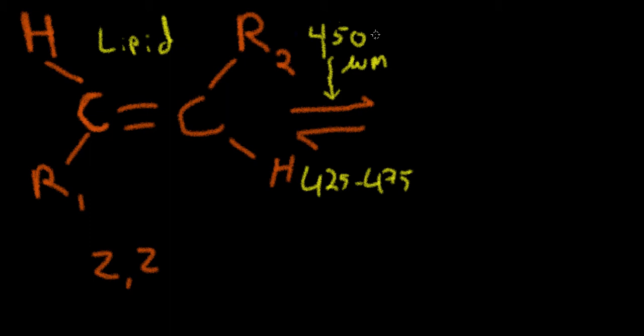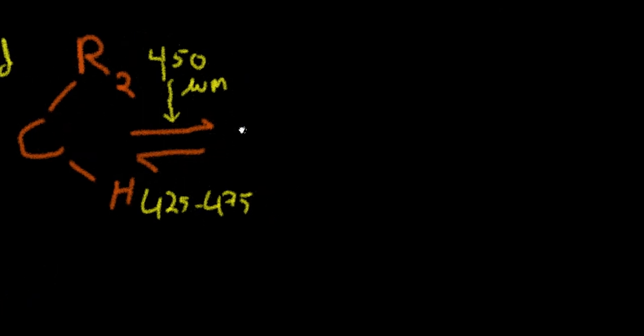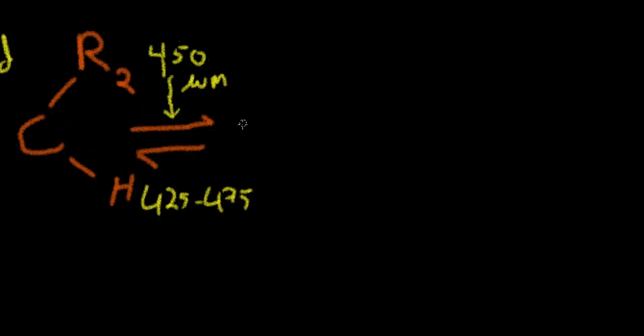And what that does is it will transiently weaken this double bond here. It does not snap the double bond. This is not ionizing radiation. We're not going to completely break anything down here, but it will transiently alter that double bond and allow it to rotate into what we refer to as the E,Z configuration.